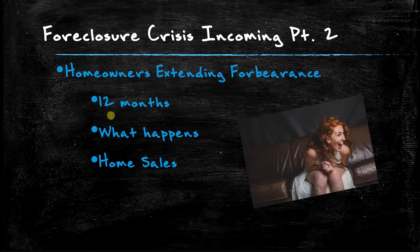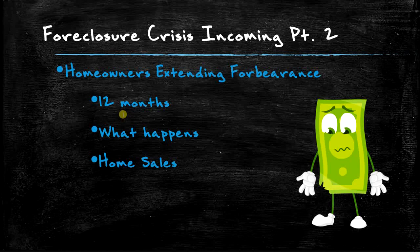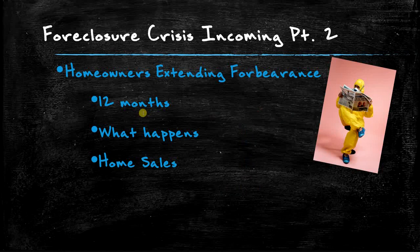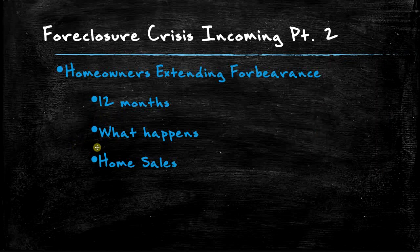Homeowners are extending their forbearance — they can hang on for 12 months without making payments, but then they have to start paying or sell. A significant portion of these people will still be without a job and unable to afford their mortgage payments after all the debt incurred since March 2020. People putting their homes in forbearance now won't have to pay until October 2021. You're going to see foreclosures and forced sales coming onto the market all through next year.